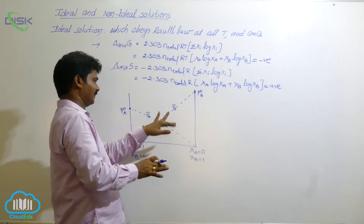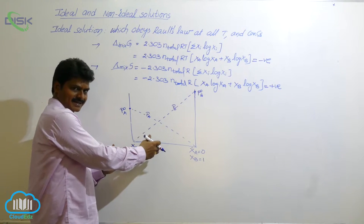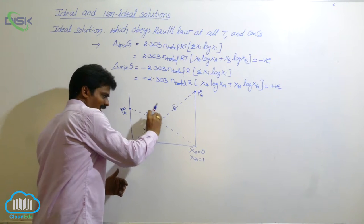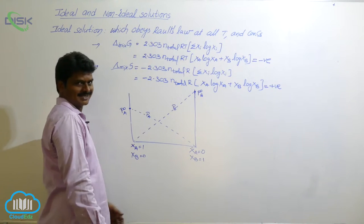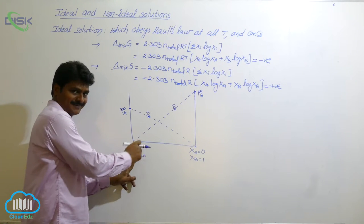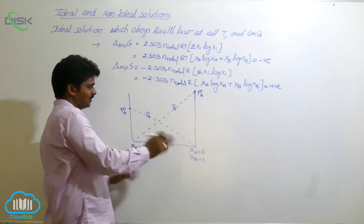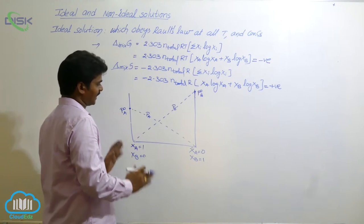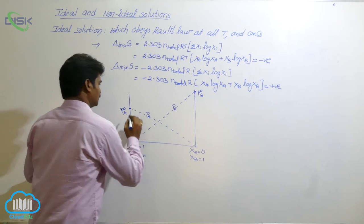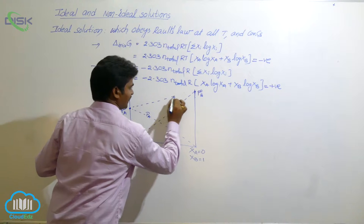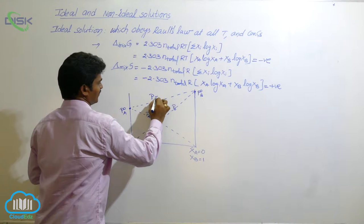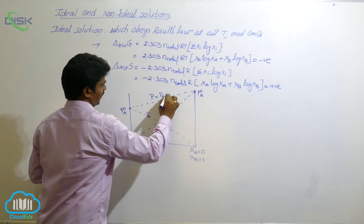In A and B, there is a decrease in the concentration of A from left to right, so the pressure due to A is decreasing. Similarly, moving to the right, the mole fraction of B is increasing, so there is an increase in the pressure of B. At any point, total pressure P equals PA plus PB.